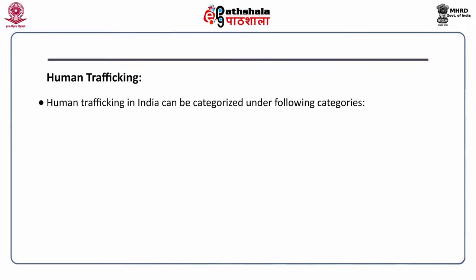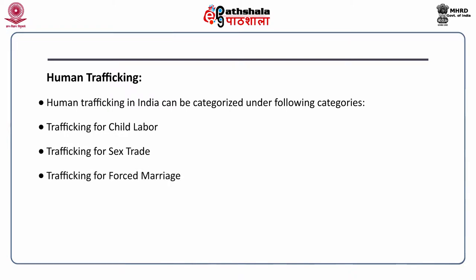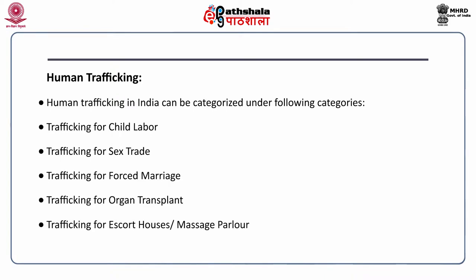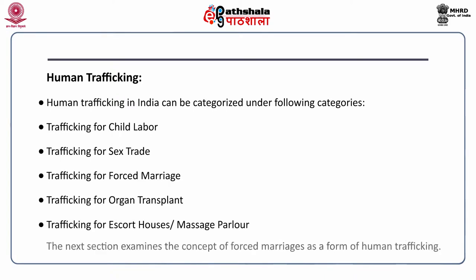Human trafficking in India can be categorized under the following categories: trafficking for child labour, trafficking for sex trade, trafficking for forced marriage, trafficking for organ transplant, and trafficking for escort houses or massage parlours. The next section examines the concept of forced marriages as a form of human trafficking.